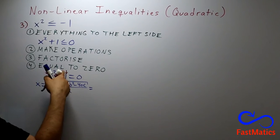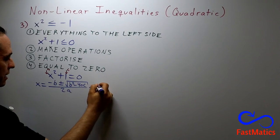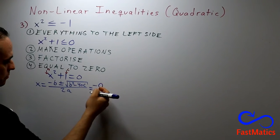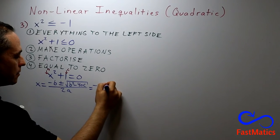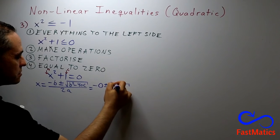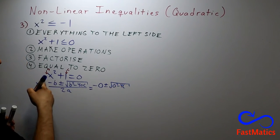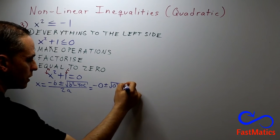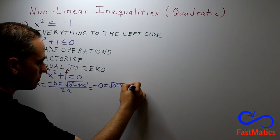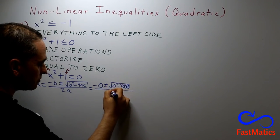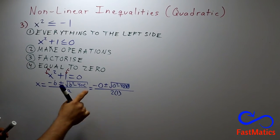And after that, the number that is alone will be c. So, here, negative zero, because b will be zero. We do not have x. Positive negative, the square root of zero squared, minus 4 times a, that is 1, times c, that is also 1. And everything divided by 2 times a, that is 1.